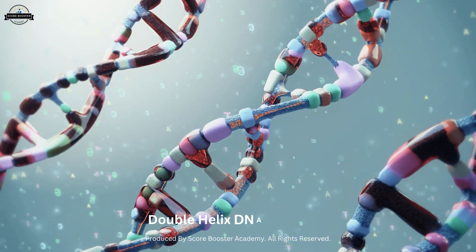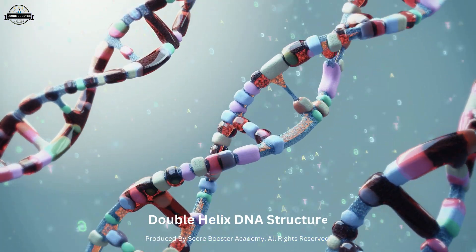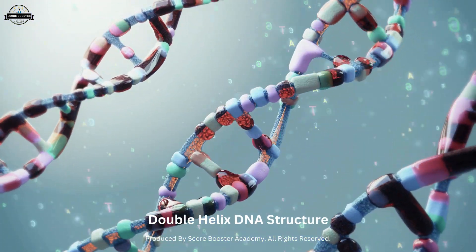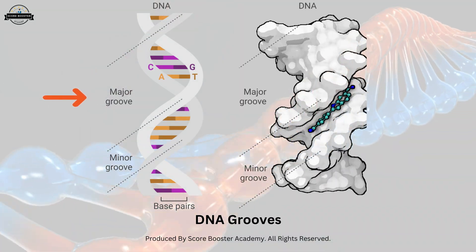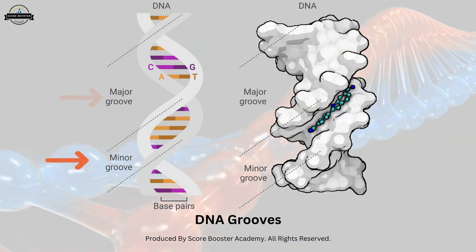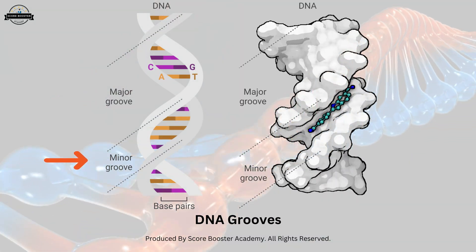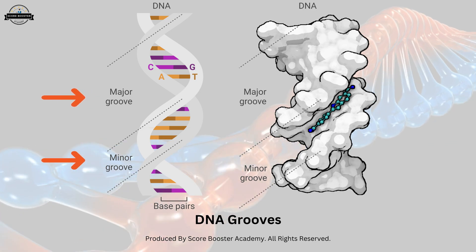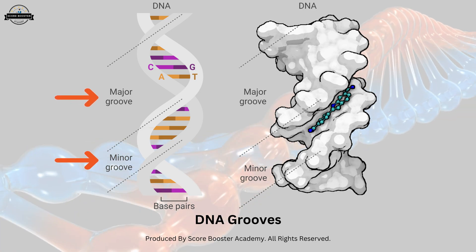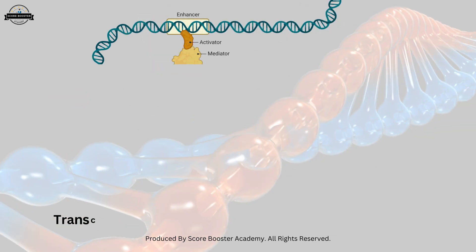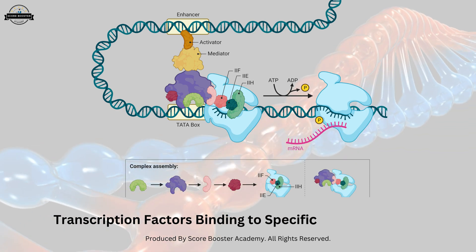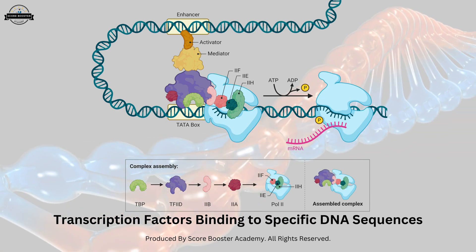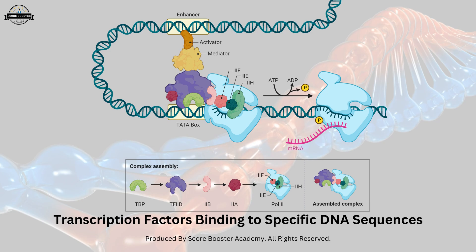The double helix structure creates grooves along the DNA molecule. The larger groove is called the major groove, while the smaller one is known as the minor groove. These grooves play crucial roles in various DNA-protein interactions, such as transcription factors binding to specific DNA sequences and initiating gene expression.